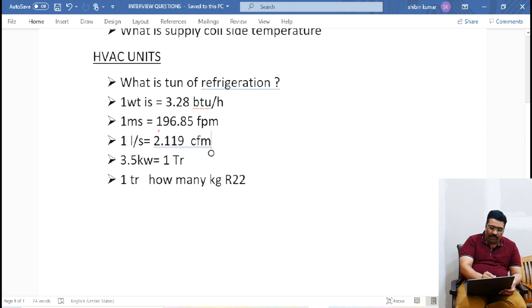So most of the cases you will find this one. So when you want to convert this, this calculation you need: one liter per second is 2.119 CFM, and 3.5 kilowatt is one TR. This one also you can keep in mind, okay?